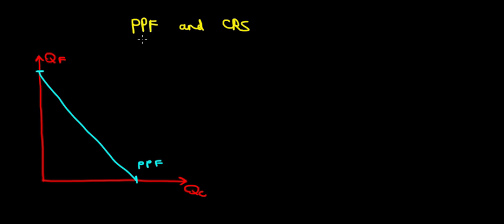Let's see what is the relationship between production possibilities frontier and constant returns to scale in this video. And again we're going to use our PPF line in this case because it's a line, and we're going to explain why it is a line when it's constant returns to scale.